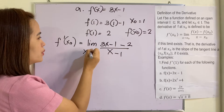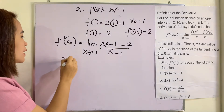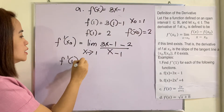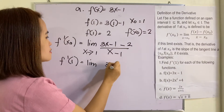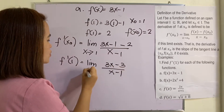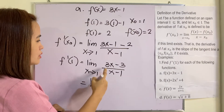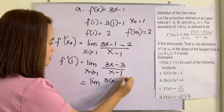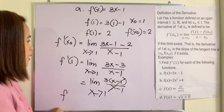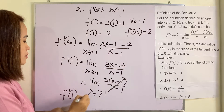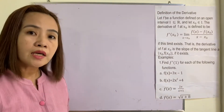As x approaches one, we have f prime of one equal to the limit of 3x minus one minus two over x minus one, which simplifies to 3x minus three over x minus one. Factoring, this is three times (x minus one) over (x minus one). The (x minus one) terms cancel, and substituting x equals one gives us three. Therefore, f prime of one is equal to three.